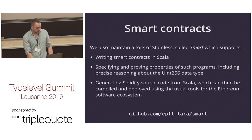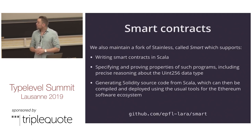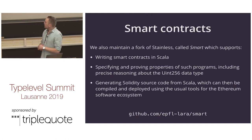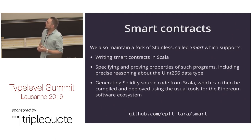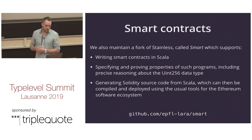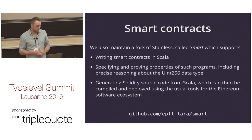Jade Amza and Romain Juffer from the lab are also maintaining a fork of Stainless called Smart, which supports writing smart contracts in Scala. You can write your contracts, reason about the Uint256 data type used in Solidity, generate Solidity code from Scala, and deploy on Ethereum. It's available on GitHub.